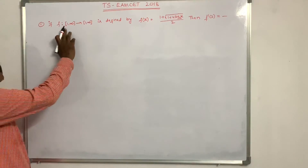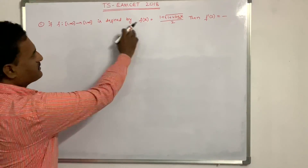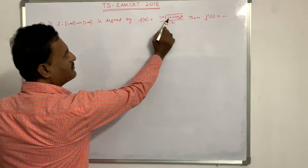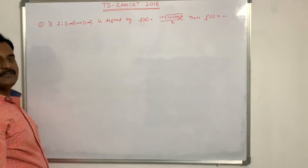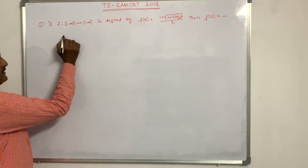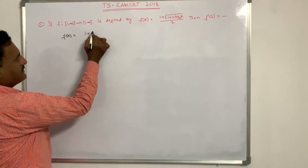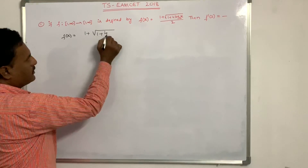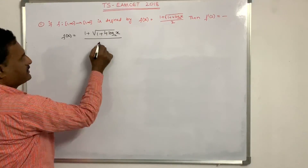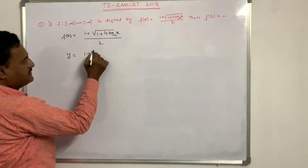First problem: f mapped from 1 to infinity to 1 to infinity is defined by f(x) equal to 1 plus under root of 1 plus 4 log x base 2, all divided by 2. Find f inverse of 3. Given f(x) equals 1 plus root of 1 plus 4 log x base 2, whole divided by 2. This is taken as y.